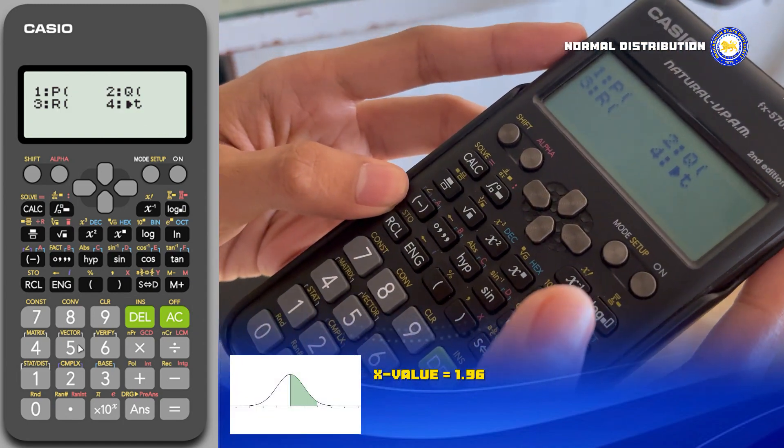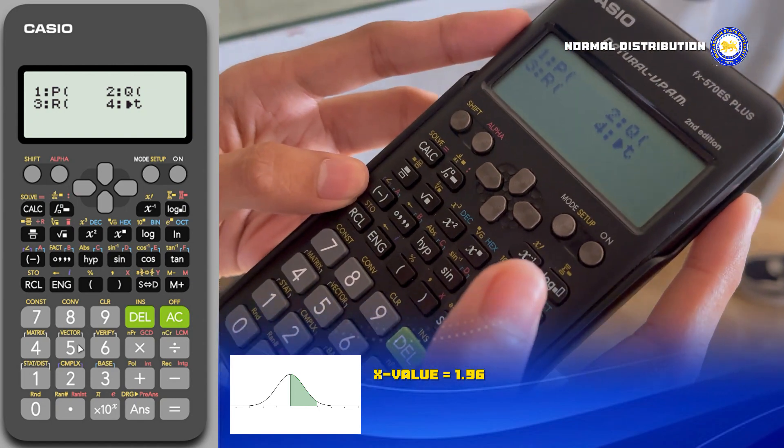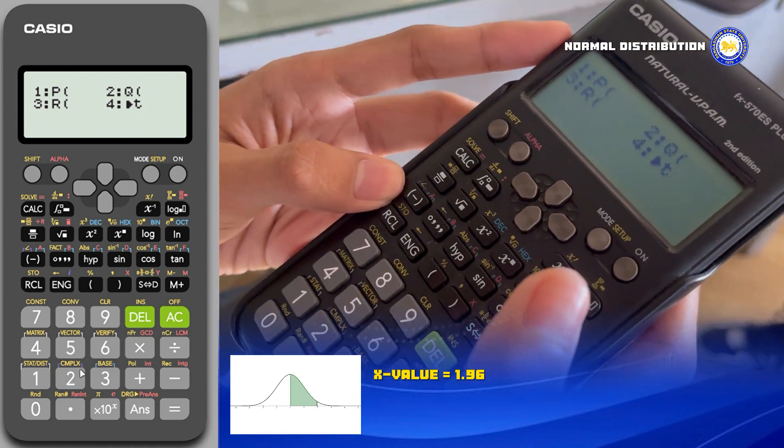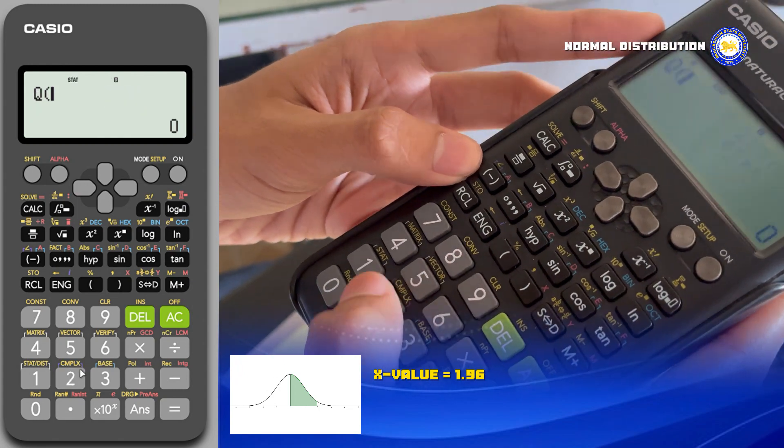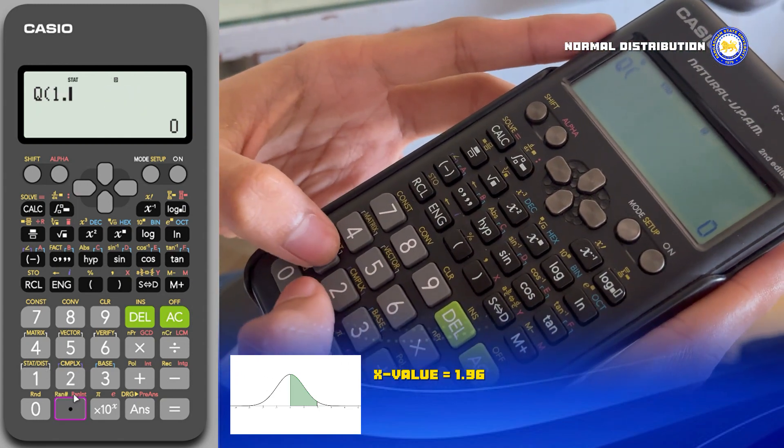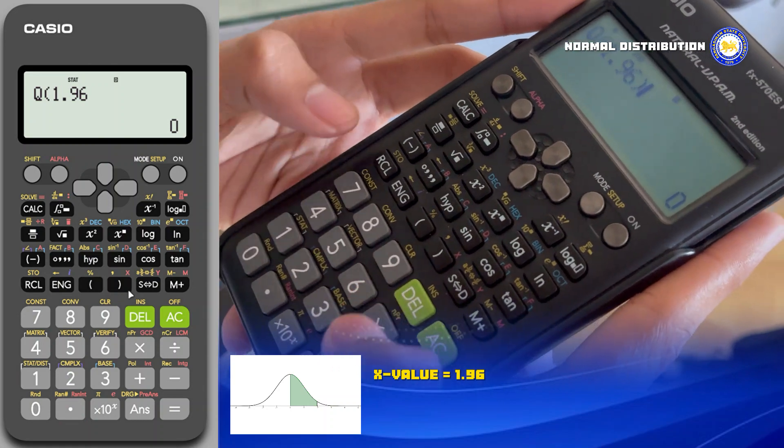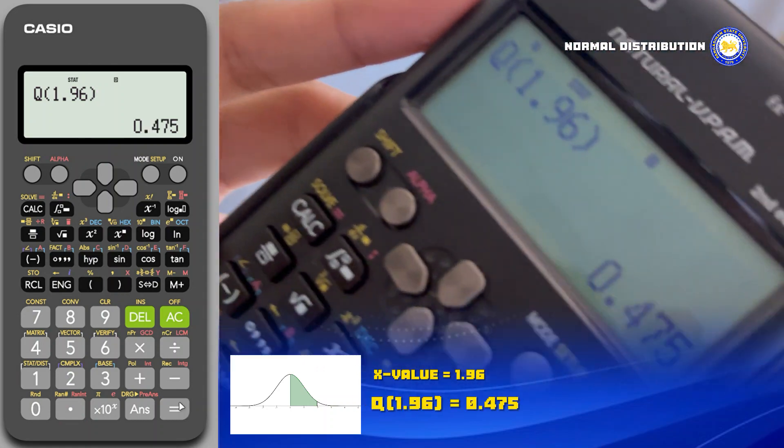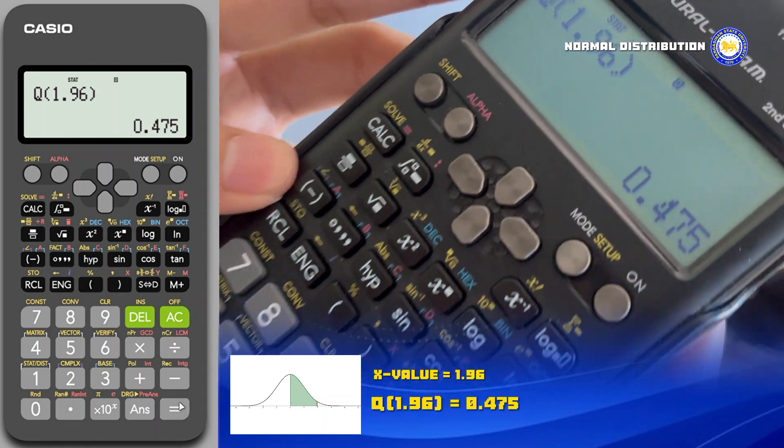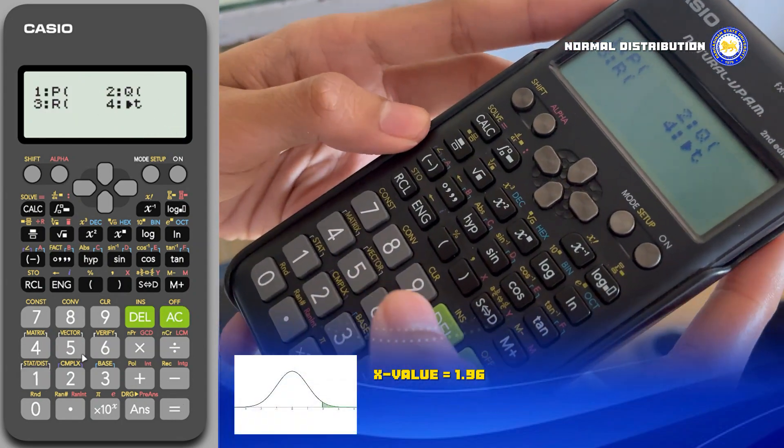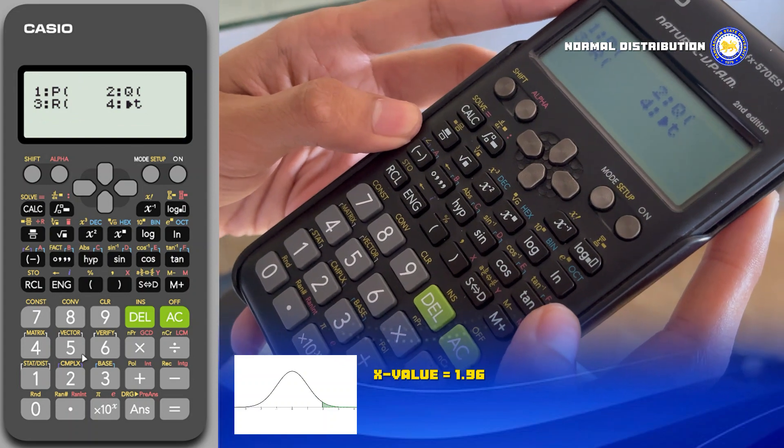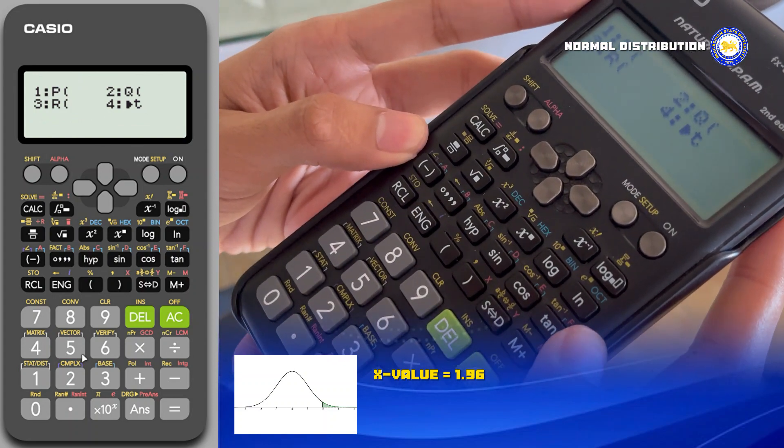Next, for the second problem we can see that the diagram is shaded in the middle of zero and x with the value of x which is 1.96. Now following the instruction again, choose Q and input 1.96 and close with parentheses, and now we get the answer which is 0.475.